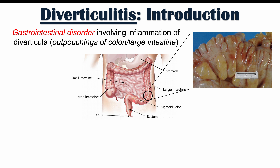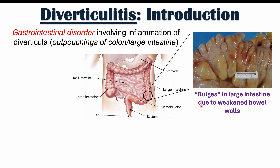Most commonly we see these diverticula in what is called the sigmoid colon. Zooming in on the large intestine, we can see these diverticula — these little outpouchings, essentially bulges in the large intestine due to weakened bowel walls. Having diverticula, the presence of diverticula, is the condition known as diverticulosis. But when these diverticula get inflamed, it is diverticulitis.